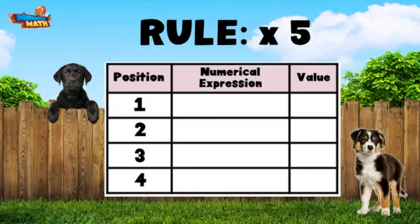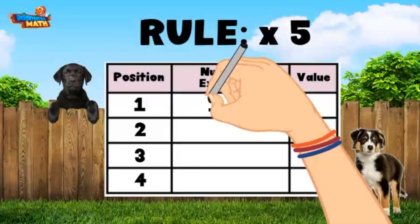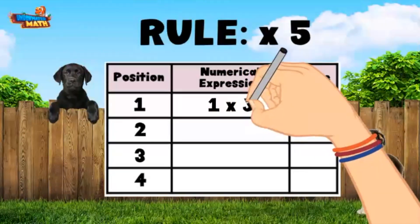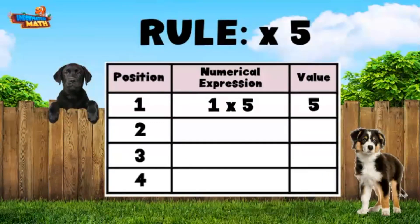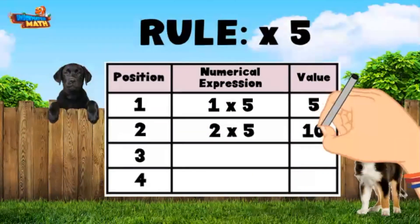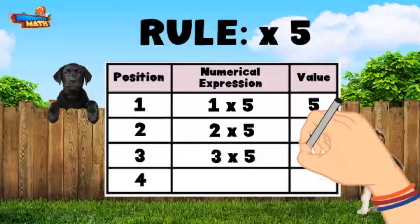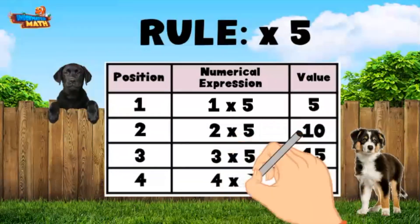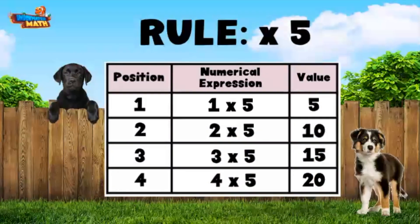Let's get to work applying this rule. We can start at position one. If our rule is to multiply by five, then in the numerical expression column we are going to take our position one and multiply by five. One times five is five, so our value is five. Two times five is a value of ten, three times five is a value of fifteen, and four times five is a value of twenty. Great job — we have completed our first pattern using a rule!